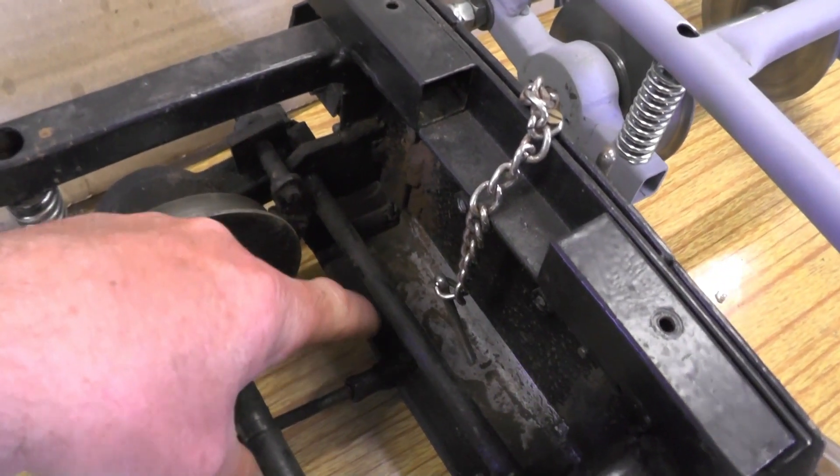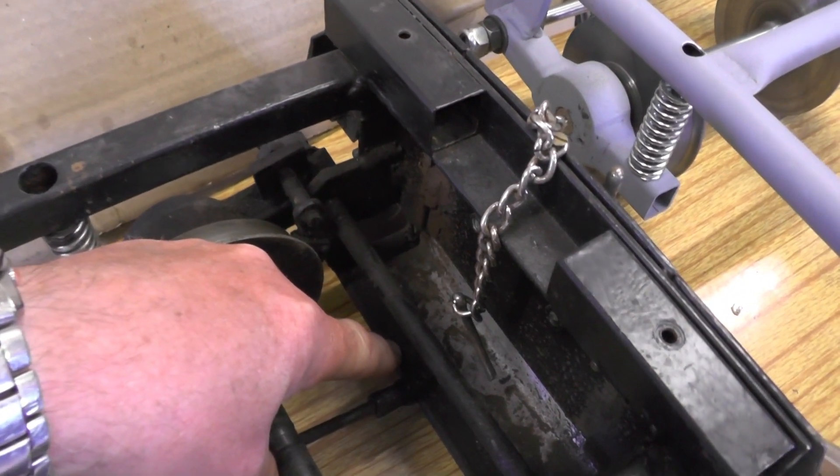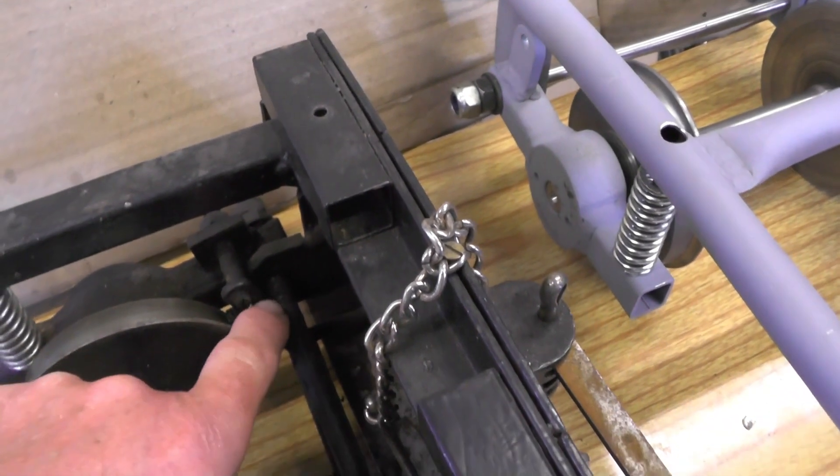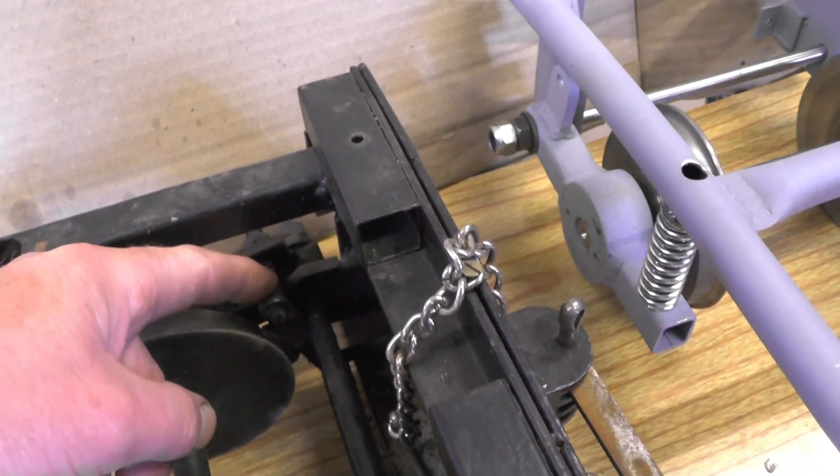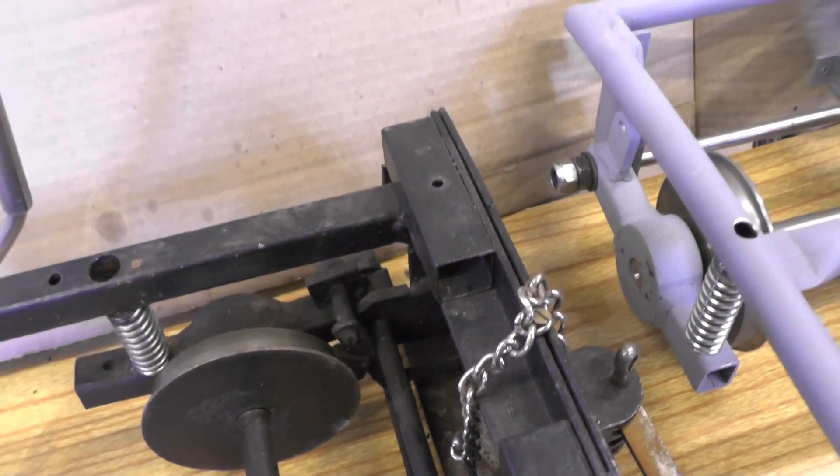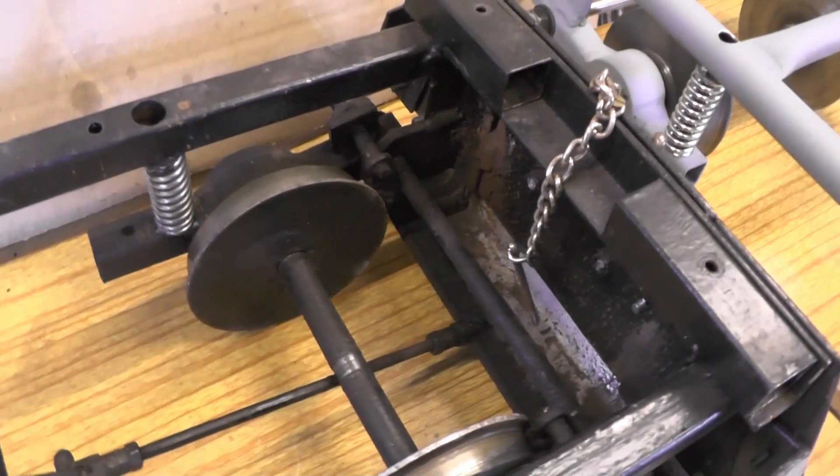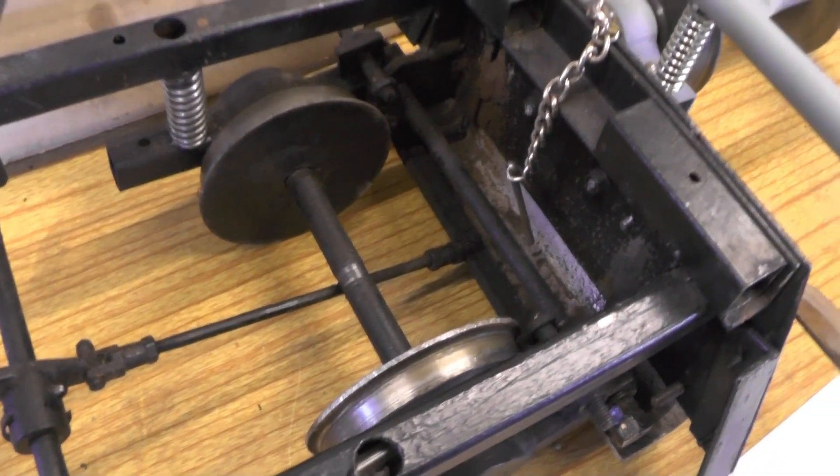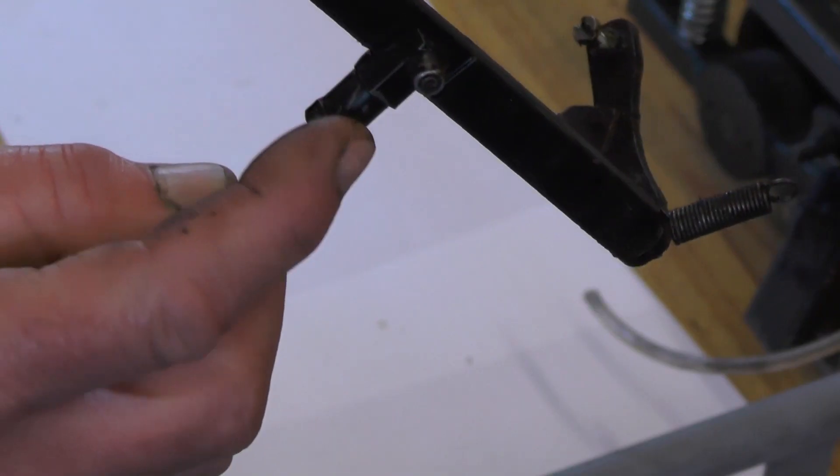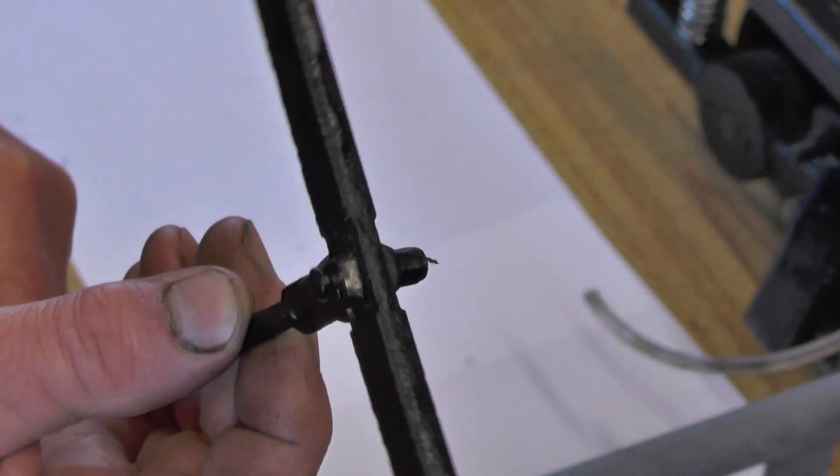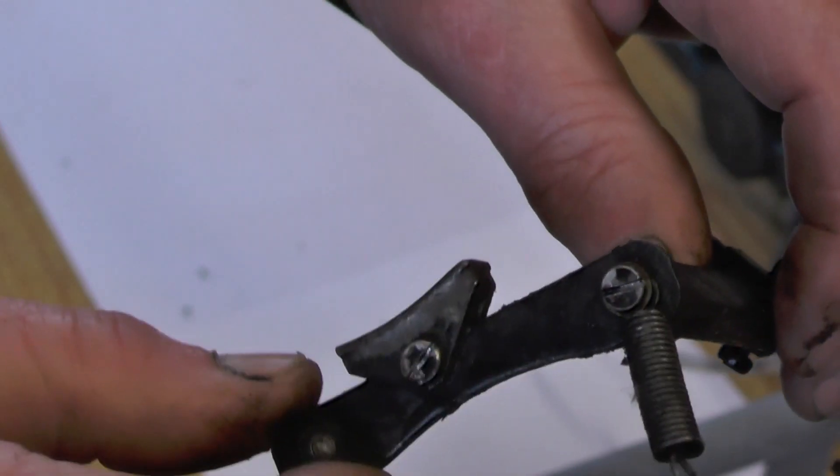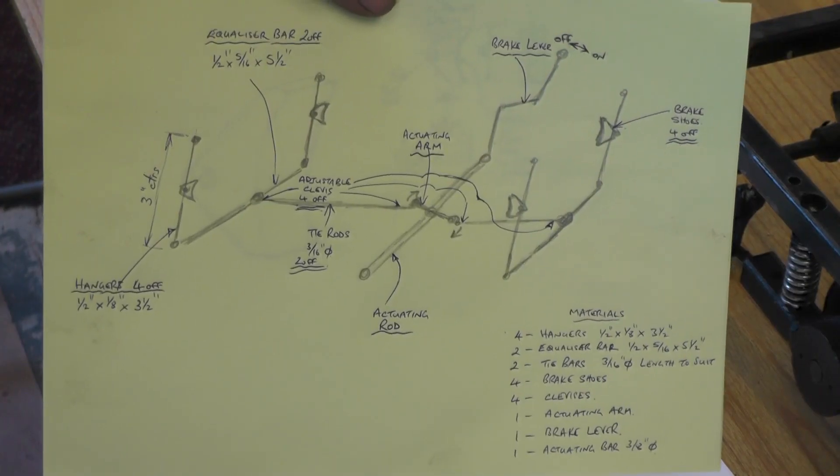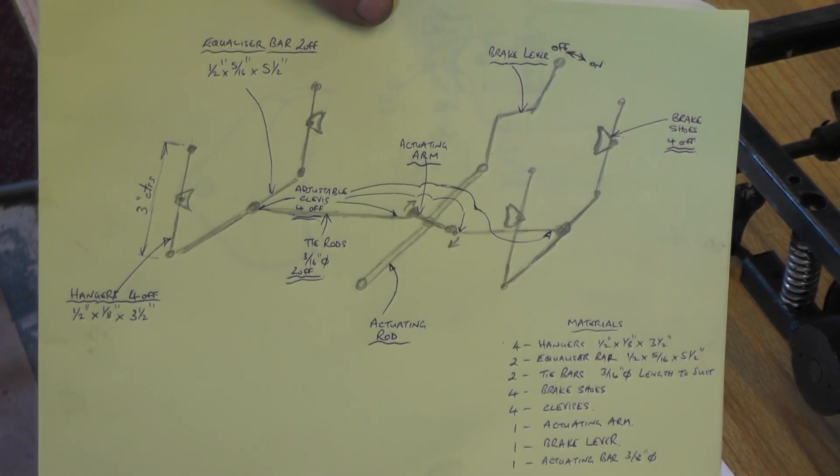There's another clevis down here that goes to the equalizing bar, and that pivots. That's connected to the brake hangers which pivot on the suspension up here, and then you've got your brake shoe onto your wheel. That's just a schematic layout of all the braking system and its components.